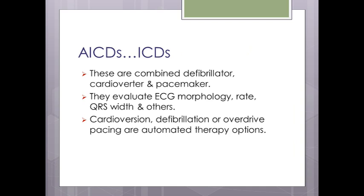Automated implanted cardioverter defibrillators (AICDs) are combined defibrillator, cardioverter, and pacemakers — they always contain a pacemaker. They evaluate the patient's ECG via an onboard processor, assessing morphology, rate, and QRS width, and the processor decides whether the rhythm warrants a shock, cardioversion, or no intervention. All options are available: cardioversion, defibrillation, and overdrive pacing.